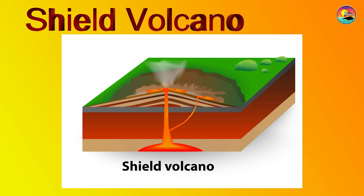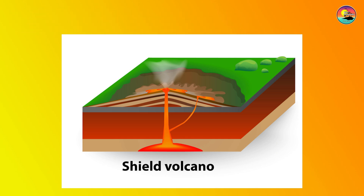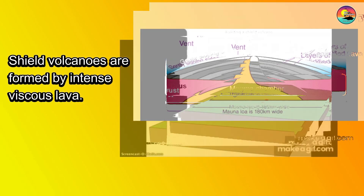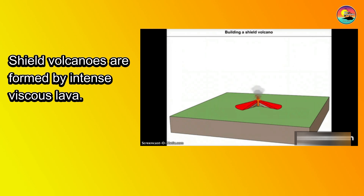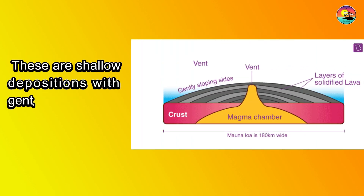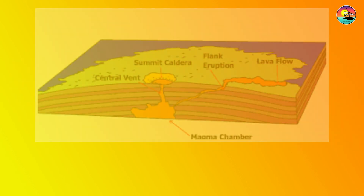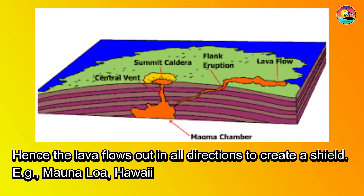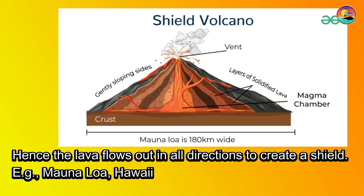Shield Volcanoes are formed by intense viscous lava. This is a sort of deposition with a gently sloping shape, hence the lava flows out in all directions to create a shield. For example, Mauna Loa, Hawaii.